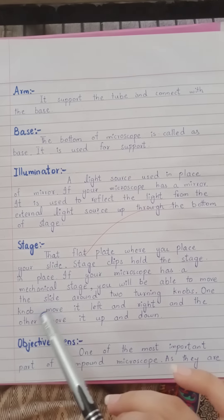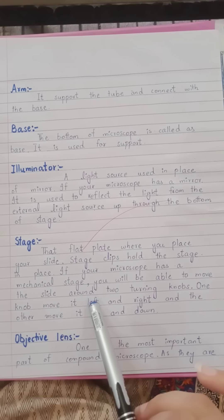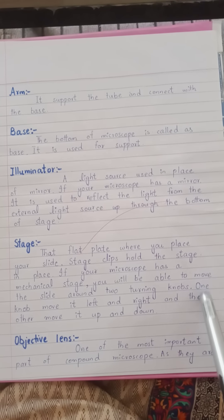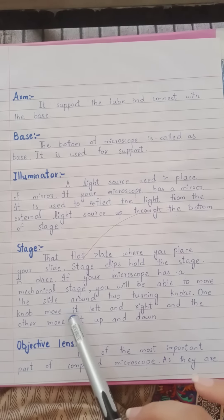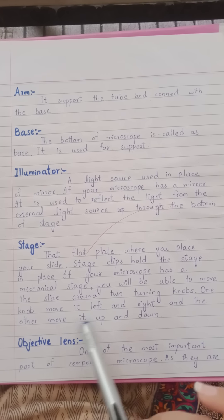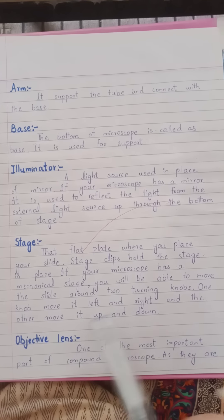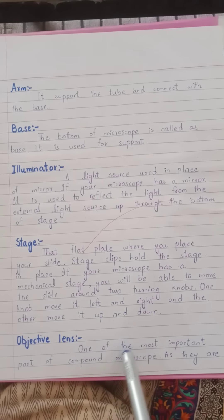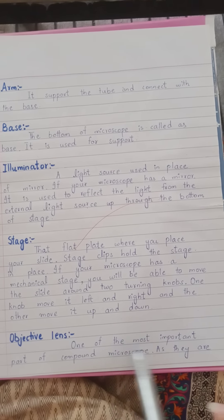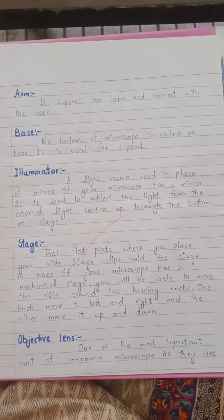Stage clips hold the slide in place. If your microscope has a mechanical stage, you will be able to move the slide around by turning two knobs — one knob moves it left and right, and the other moves it up and down. The objective lens is one of the most important parts of the compound microscope, as they are the lenses closest to the specimen.